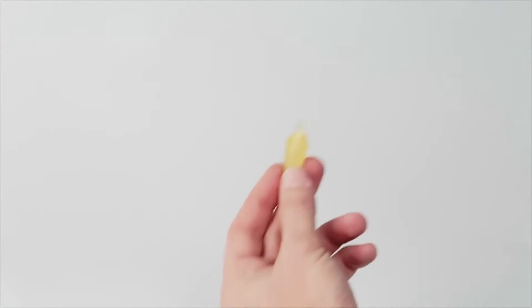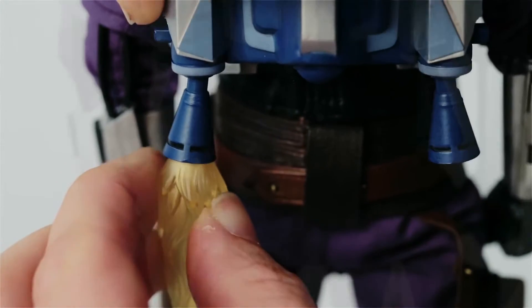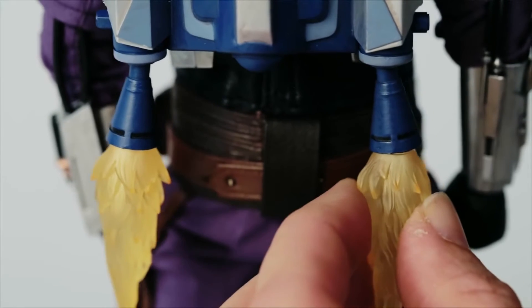If you'd like to display the jetpack with flame attachments, insert the flame with the round tip into the left jetpack nozzle and the flame with the square tip into the right jetpack nozzle.